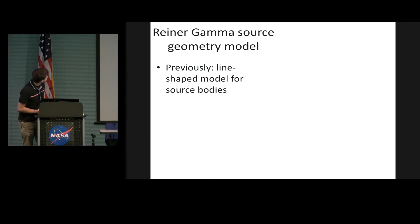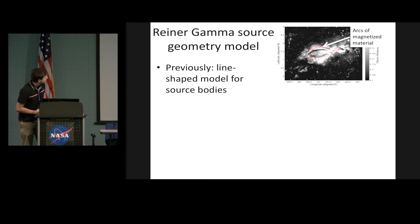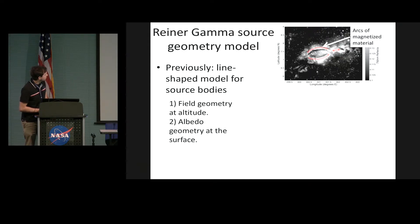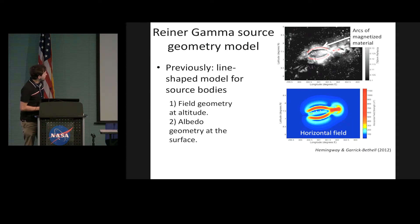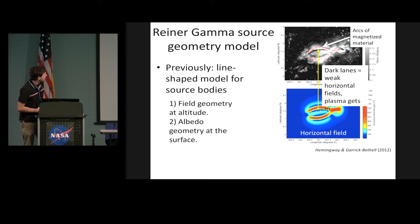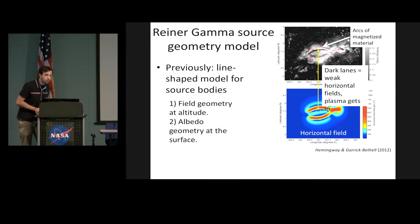To model Reiner Gamma source bodies previously, my former student Doug Hemingway and I came up with the idea that maybe there are arcs of magnetized material inside Reiner Gamma. Those red lines represent two lines of magnetic material — a nice way to explain a bunch of things. It explains the geometry of the field observed at altitude and could also explain the albedo pattern. Here's a map of the magnetic field resulting from those arcs, showing cusp structures in the horizontal field where dark lanes form — where horizontal fields are weak and plasma can get in.